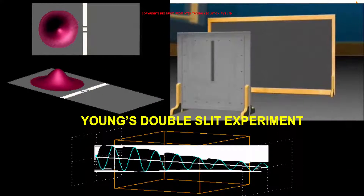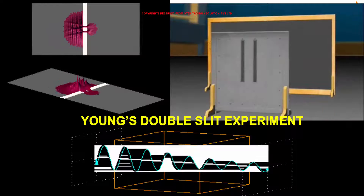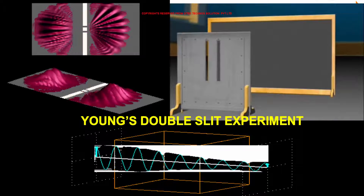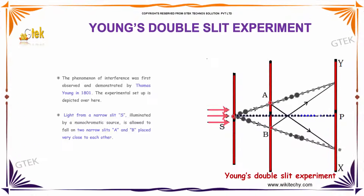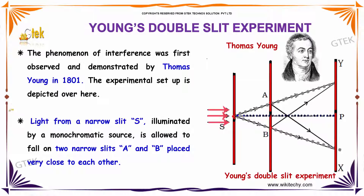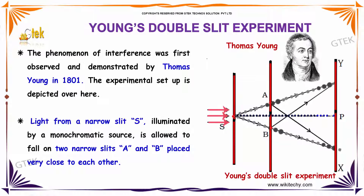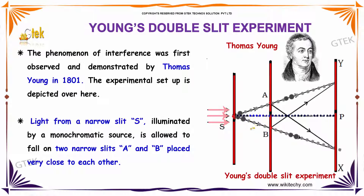Now let's talk about Young's double slit experiment. The phenomenon of interference was first observed and demonstrated by the great physicist Thomas Young in 1801. In the experimental setup, light from a narrow slit illuminated by a monochromatic source is allowed to fall on two narrow slits A and B placed very close to each other.